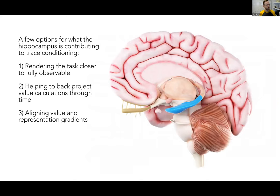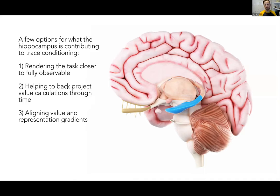Another interesting observation is that there seems to be a misalignment of gradients in these systems. The gradient from value updates and the gradient from recurrent GRU updates are highly correlated in the Monte Carlo case, but not well correlated as you shift lambda towards zero. This is another problem that exists when bootstrapping return. What the hippocampus might be doing — which is why animals need one for trace conditioning — is helping to render the task closer to fully observable by learning good latent state representations, doing something more like Monte Carlo via replay and backwards projections of value, and potentially aligning value and representation gradients.